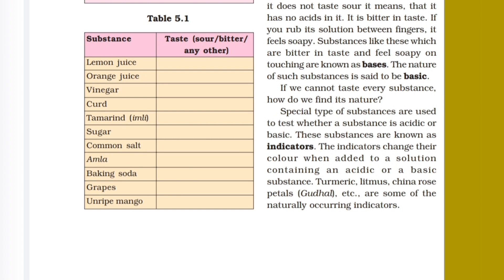So that's it for acids and bases in this video. We studied what acids and bases are, the properties of acidic and basic substances, and what indicators are. You should review all these points before we continue to the next topic in the next video.